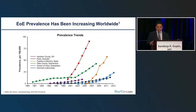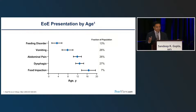The presentation of EOE varies by age. That 15-year-old had dysphagia, but that is only typical in teenagers and adults. The younger you go, the less specific the symptoms become — feeding dysfunction, vomiting, reflux-like symptoms, or abdominal pain. You have to maintain a broad differential and think of EOE because the younger child may not have the classic symptom of dysphagia.